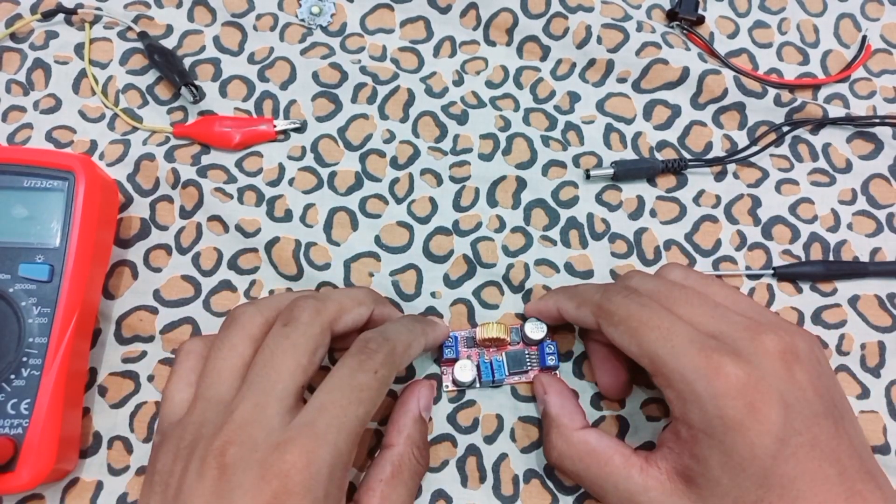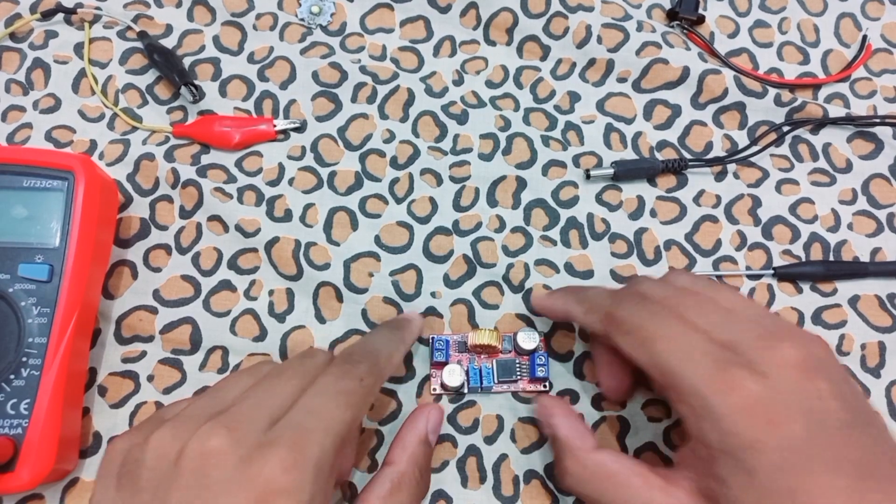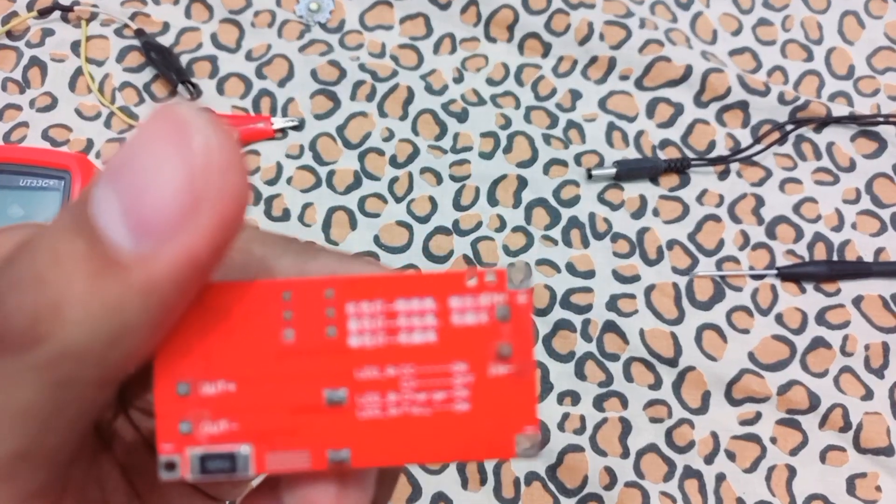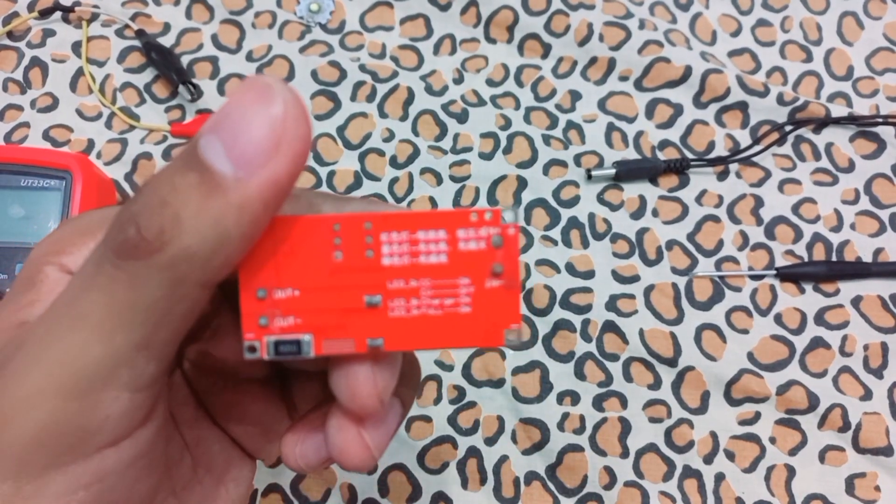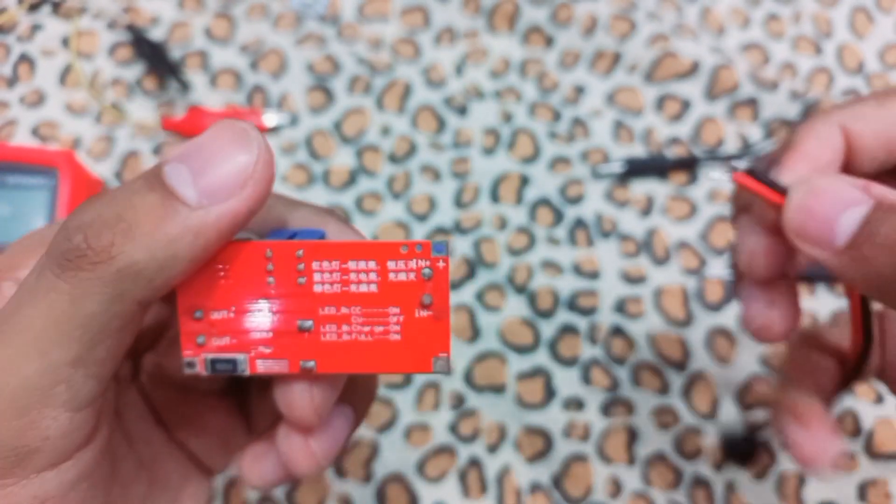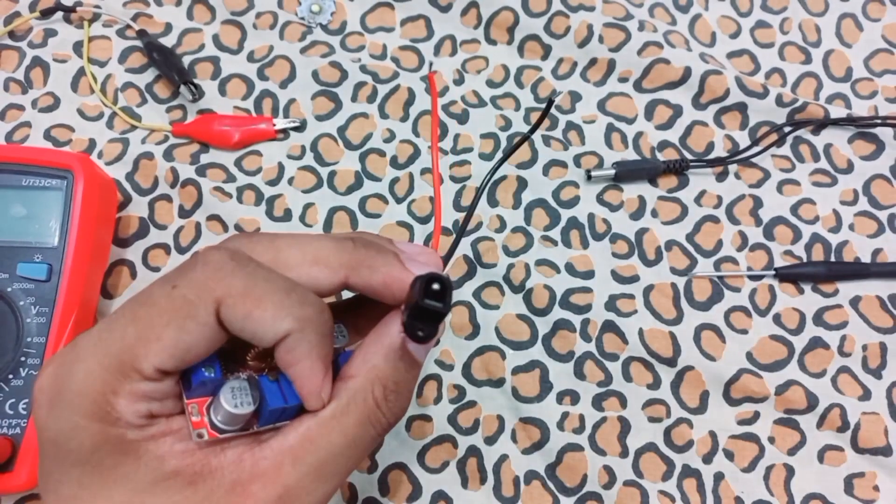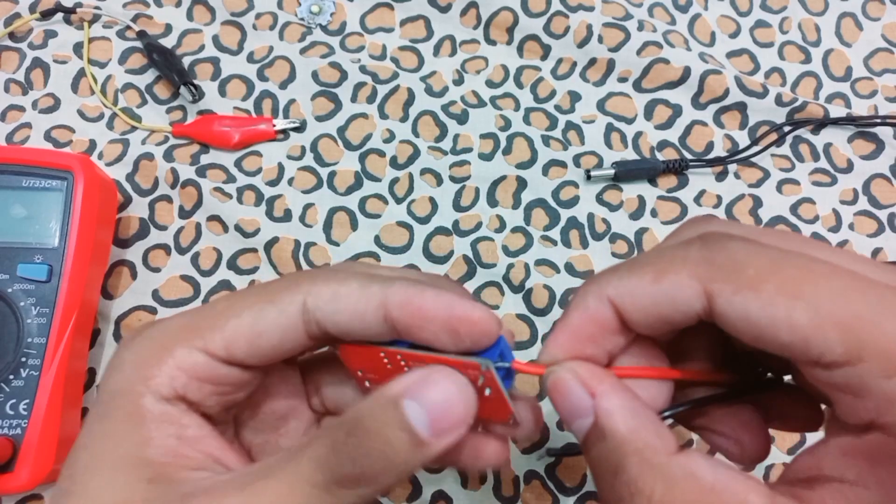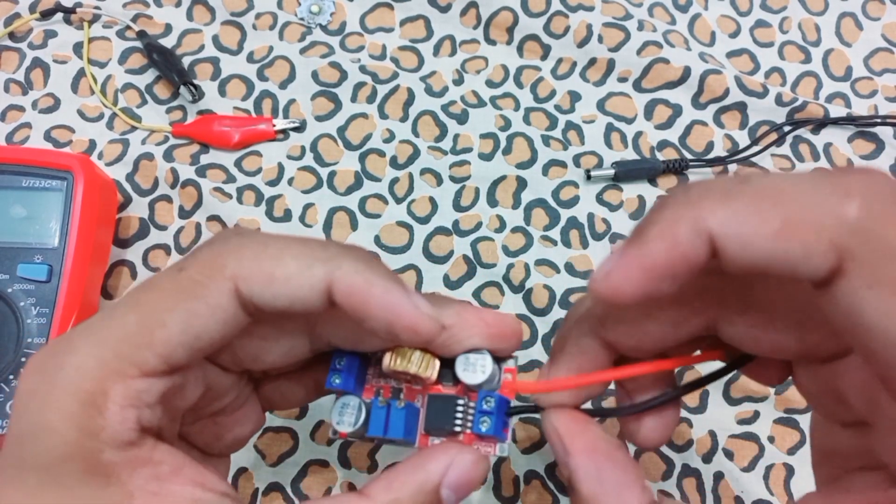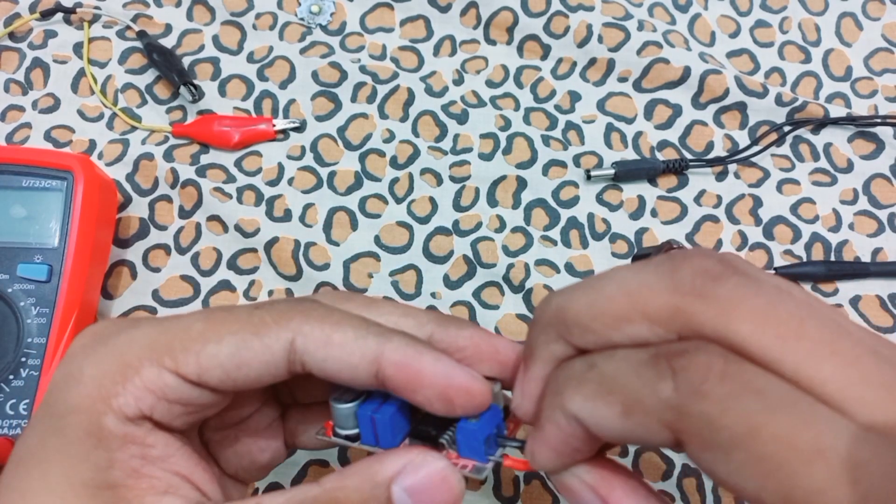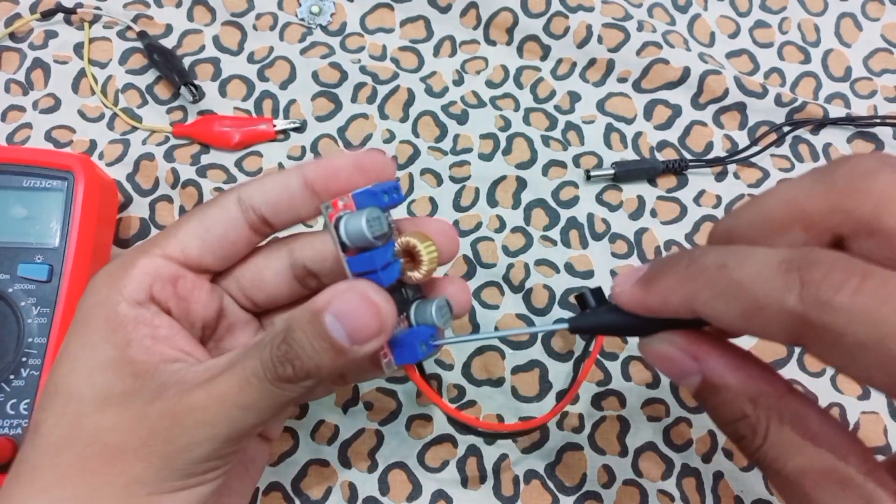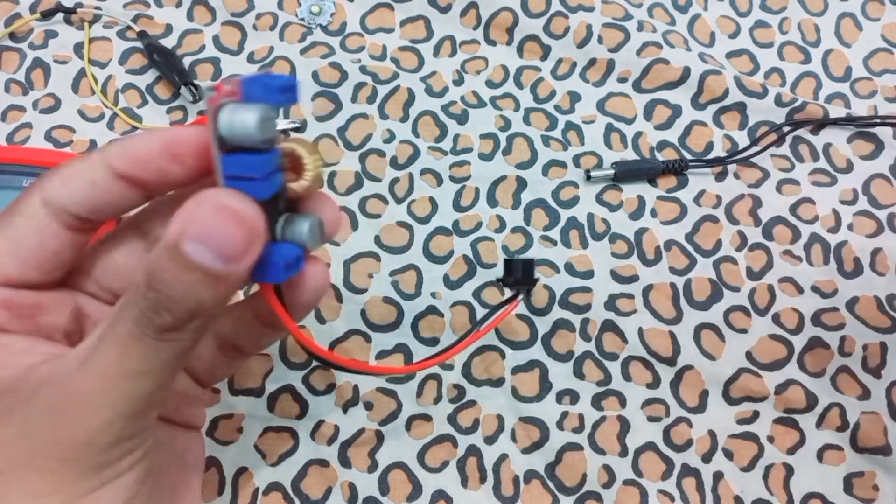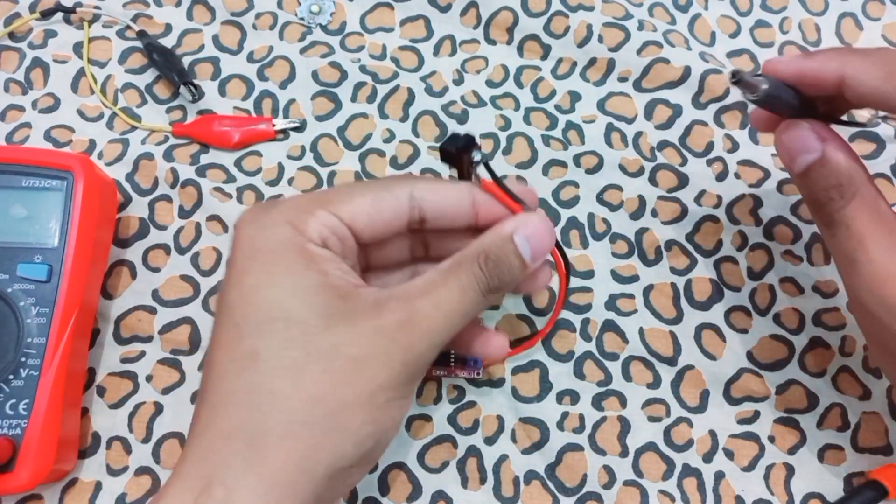Let's start making it as a constant current LED driver. Here for connections, it has the input positive and input negative. For connections I am using this DC barrel jack to make secure connections, red for positive and black for negative.